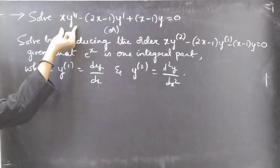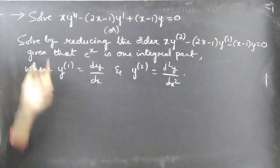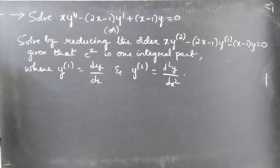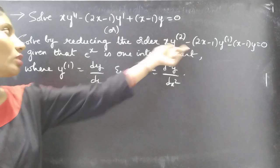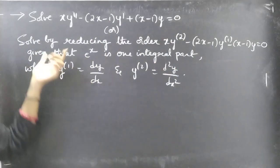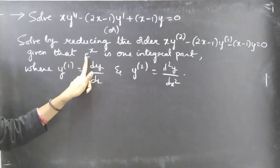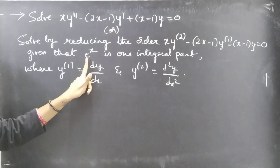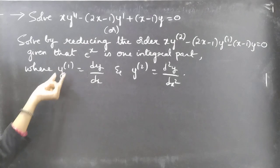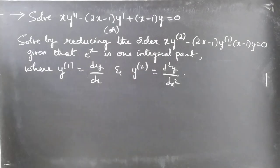Problem: Solve x·y'' − (2x − 1)·y' + (x − 1)·y = 0. To solve by reduction of order, we are given that e^x is one integral — that is, one part of the complementary function of the given equation. Here y' denotes dy/dx and y'' denotes d²y/dx².